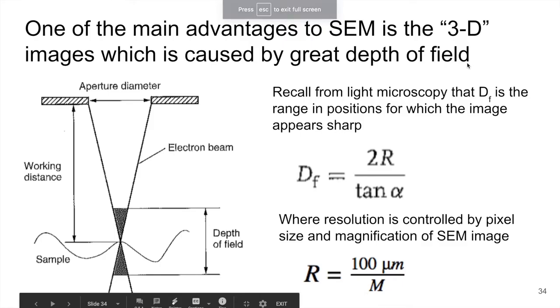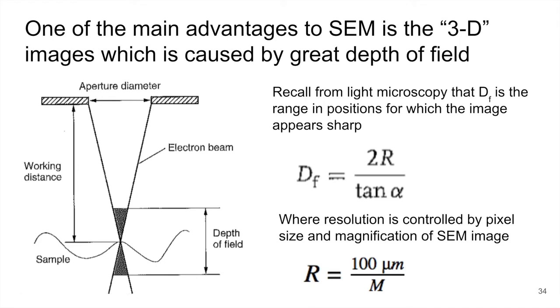All right, so one of the main advantages that we talked about with SEM was the sort of 3D nature that the images have. And again, this is caused by depth of field. So let's explore depth of field in some more detail here.